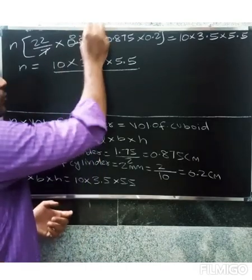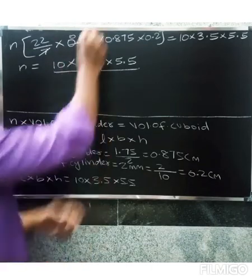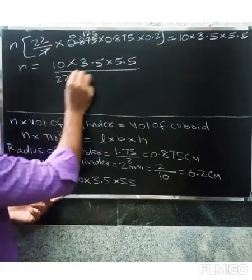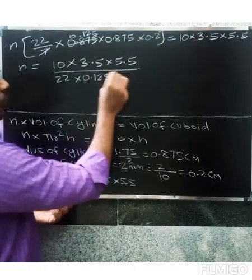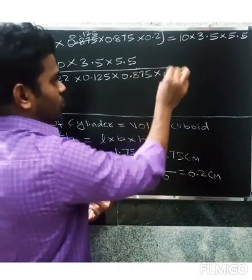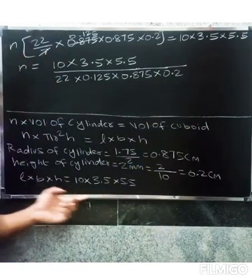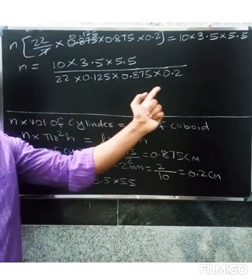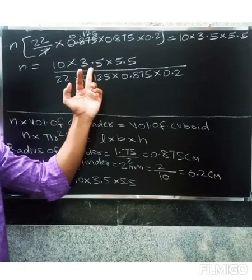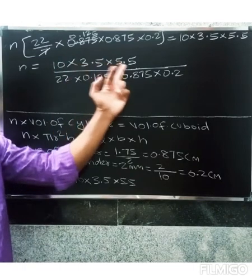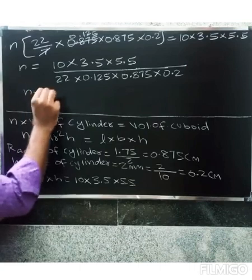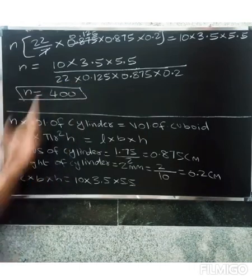Converting decimals to whole numbers: 10 into 3.5 gives 35, into 5.5 gives us the numerator. For the denominator, multiply 22 by 7 into 0.125 into 0.875 into 0.2. This gives n equals 400.